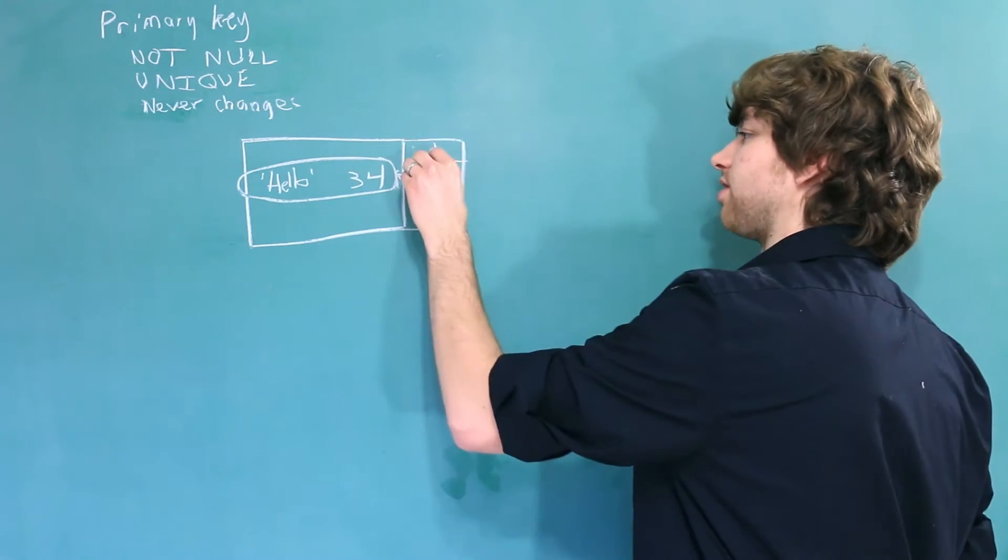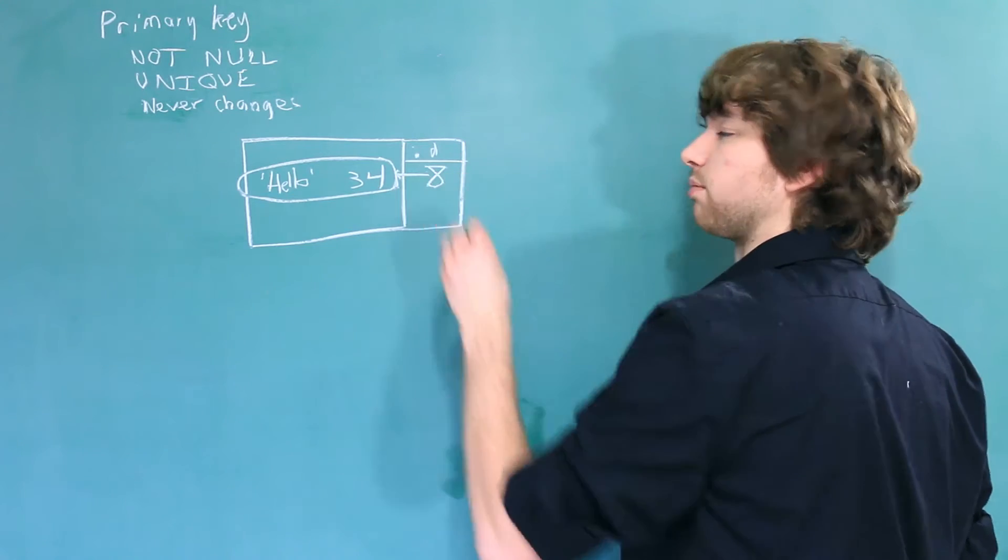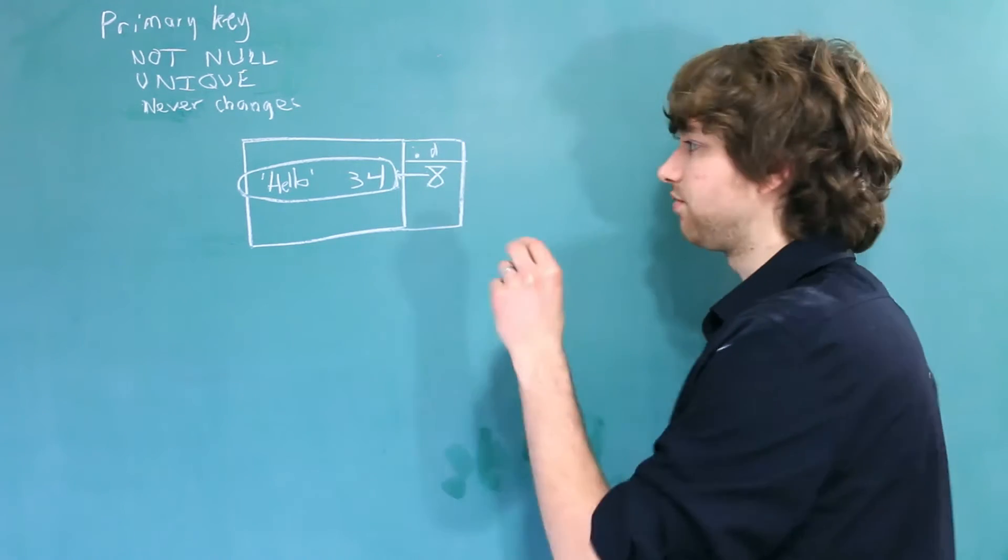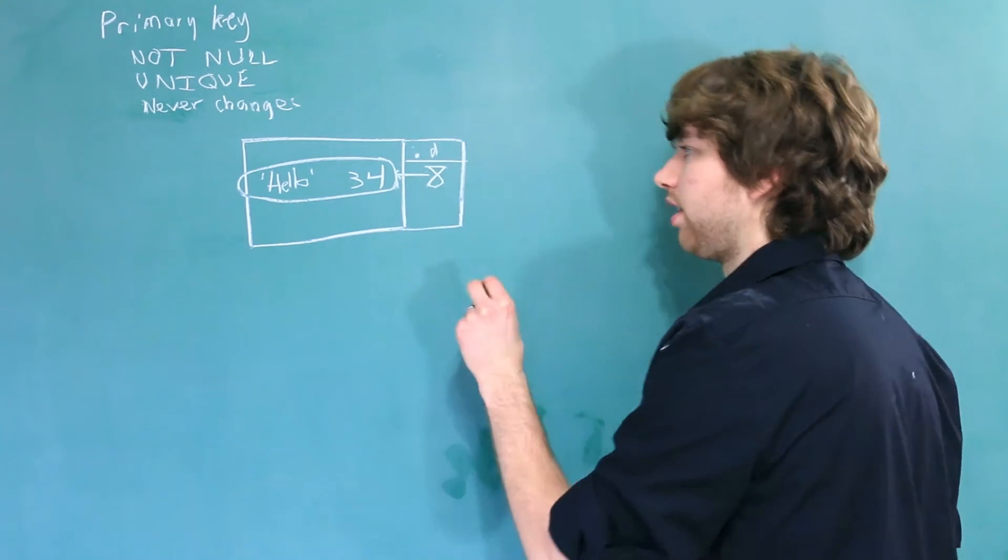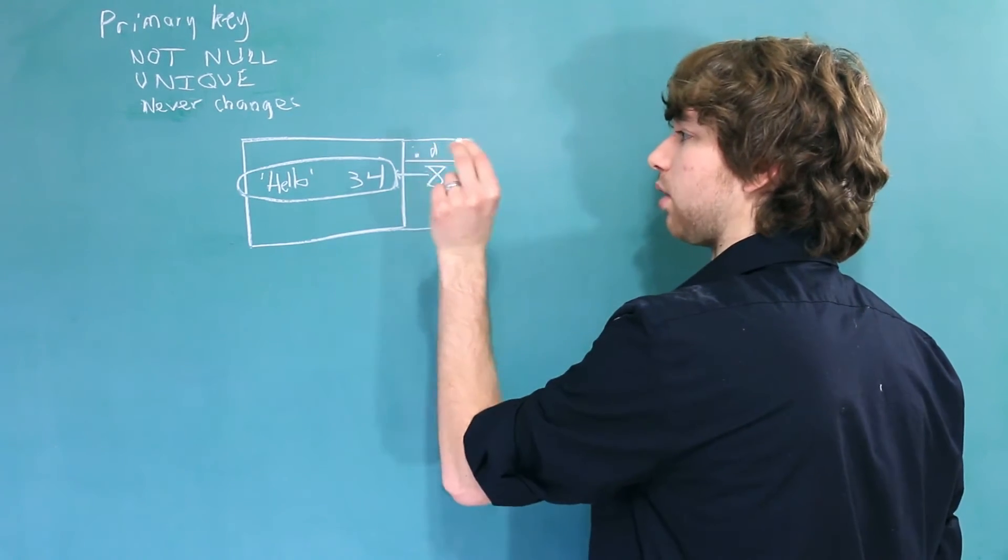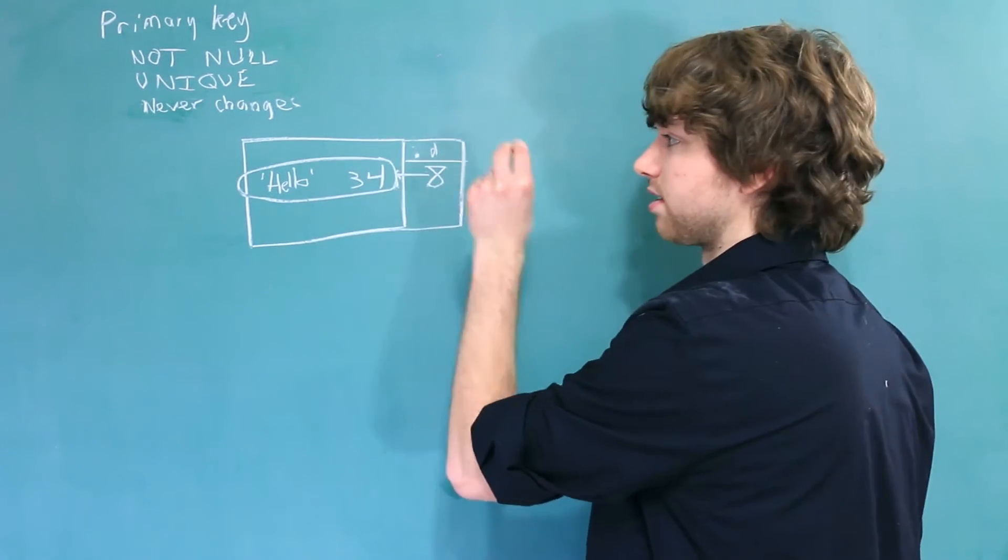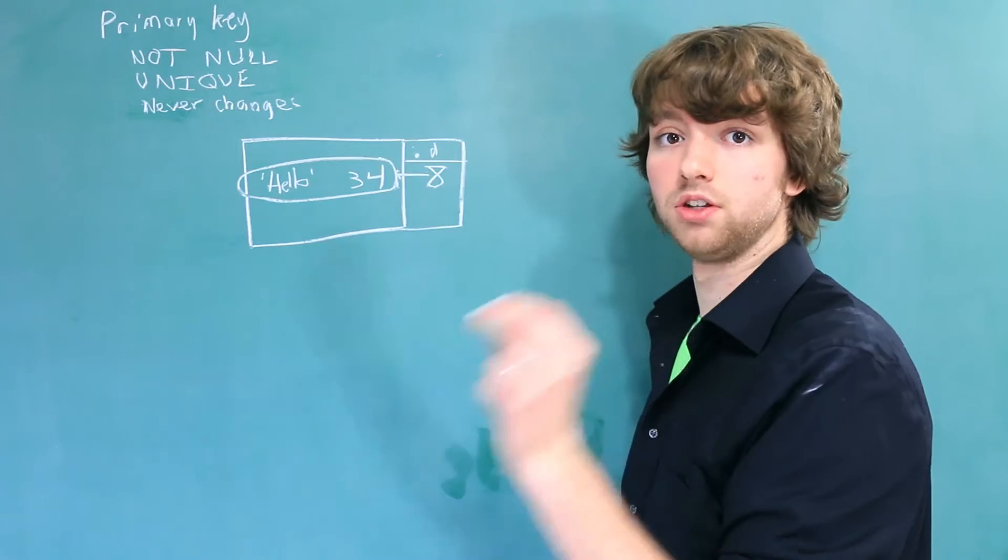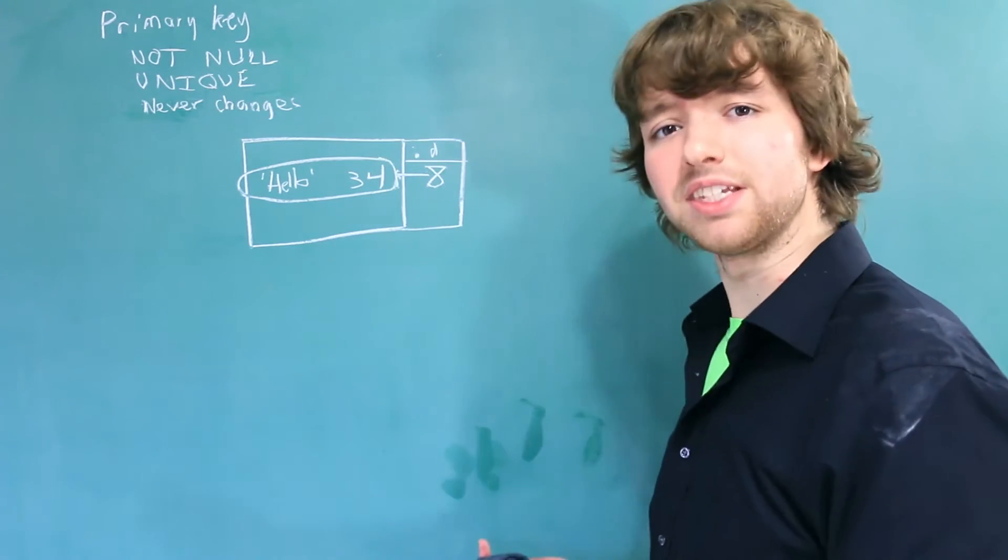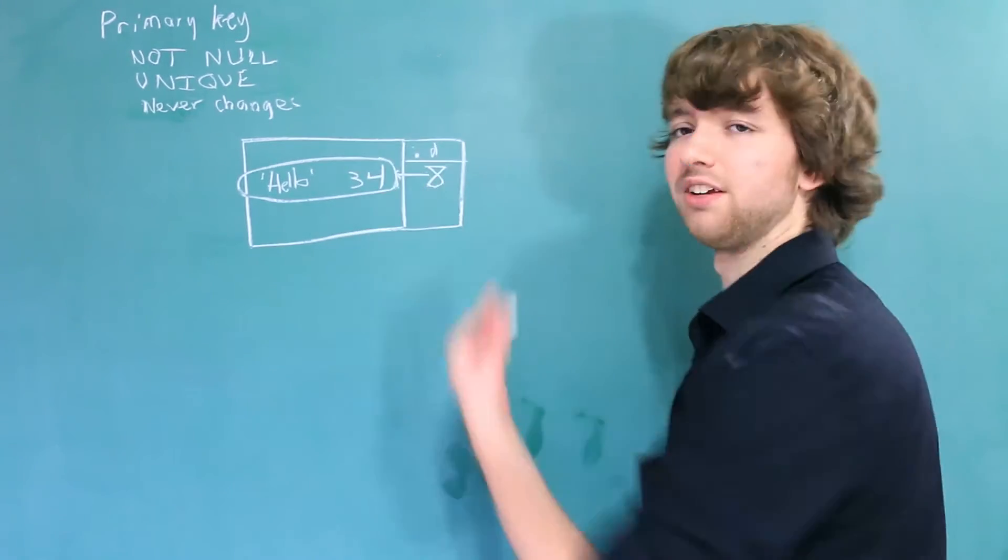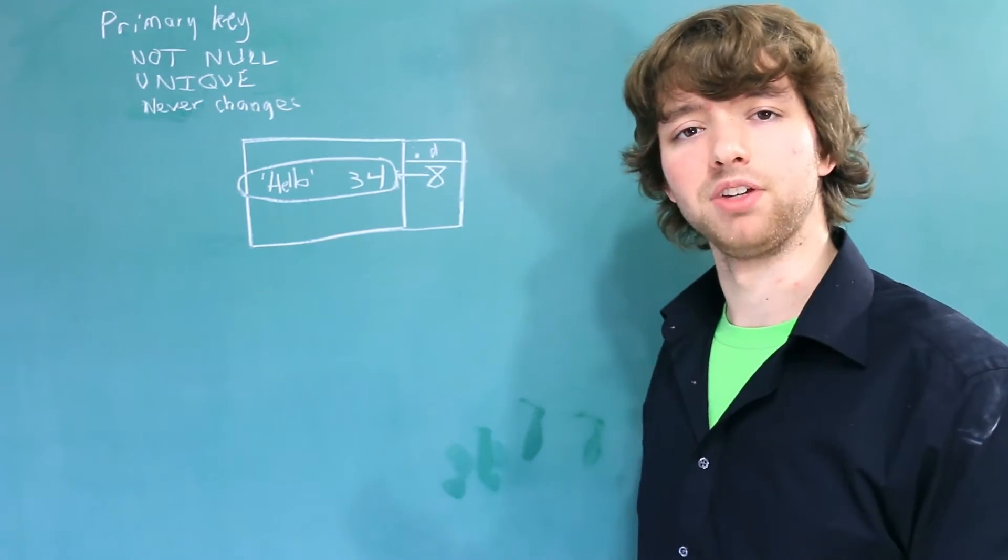But now we go ahead and change this 7 to an 8 just for some reason. Now this brings confusion because we don't know if the 8 is talking about a new entity or it's the same entity with a new number. You might think, well, obviously it's the same entity with just a different ID, but maybe it's not so obvious.